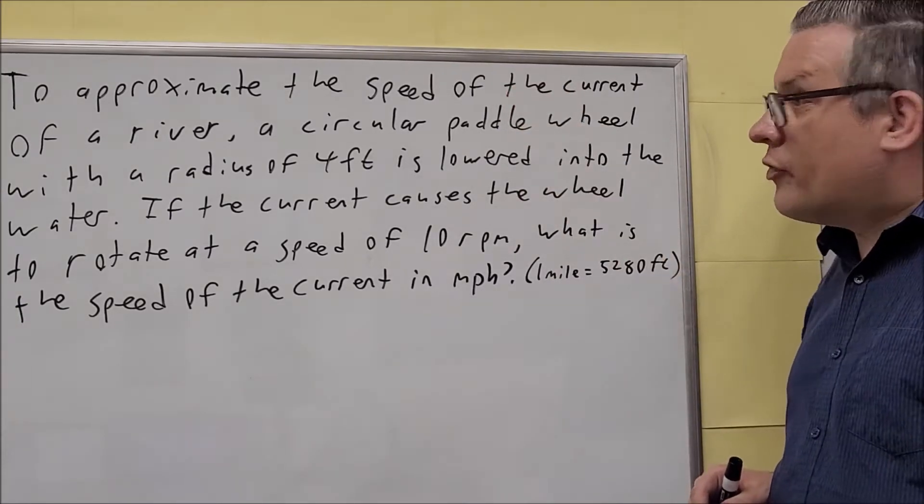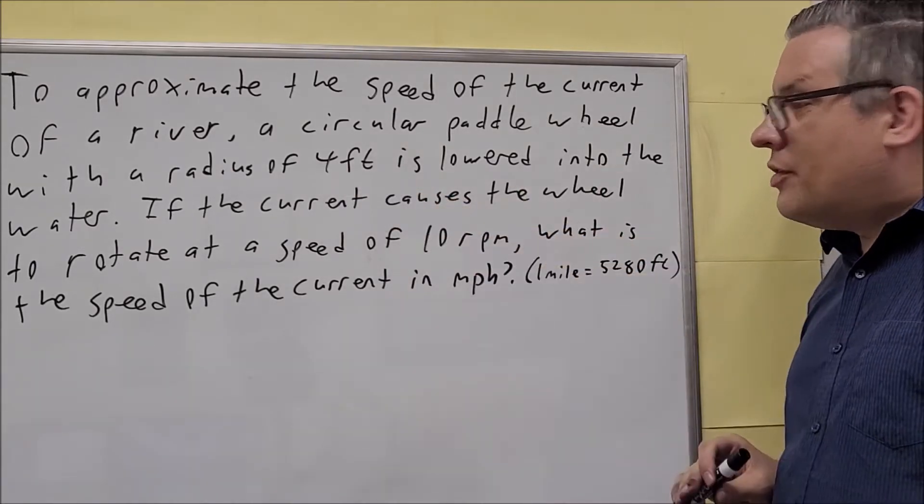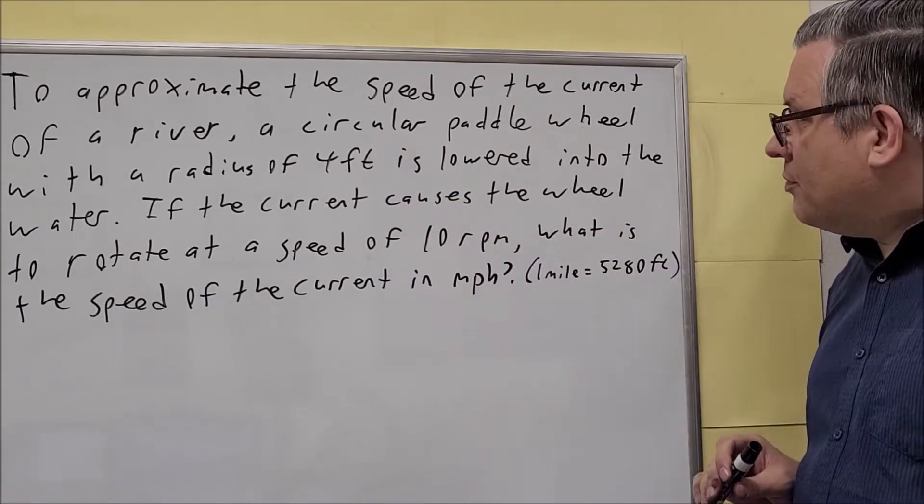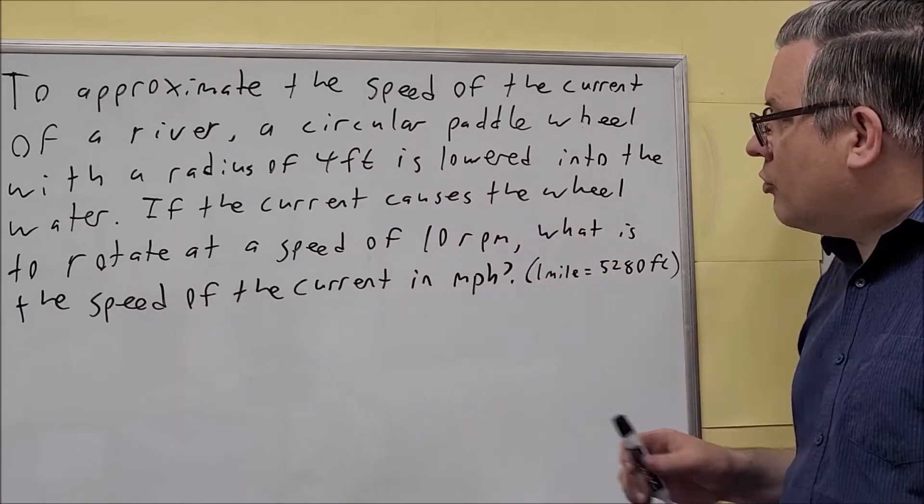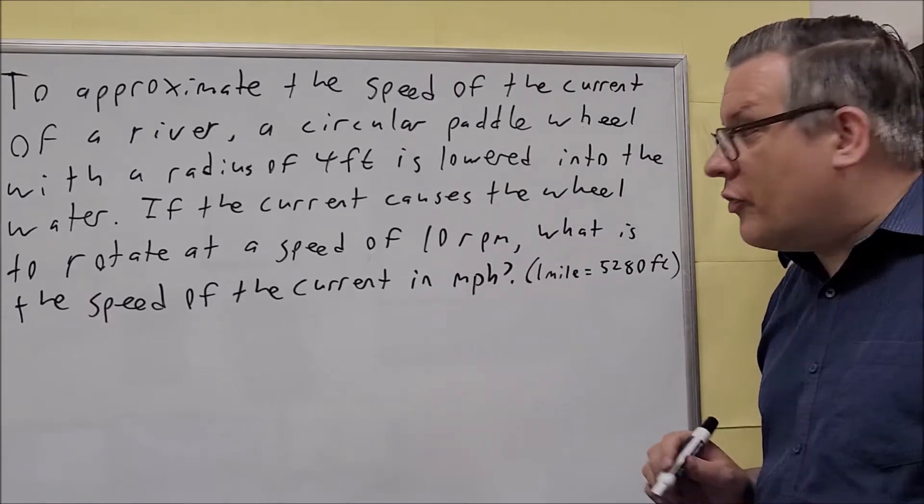To approximate the speed of the current of a river, a circular paddle wheel with a radius of four feet is lowered into the water and the current causes the wheel to rotate at a speed of 10 RPMs. We want to find the speed of the current in the river.